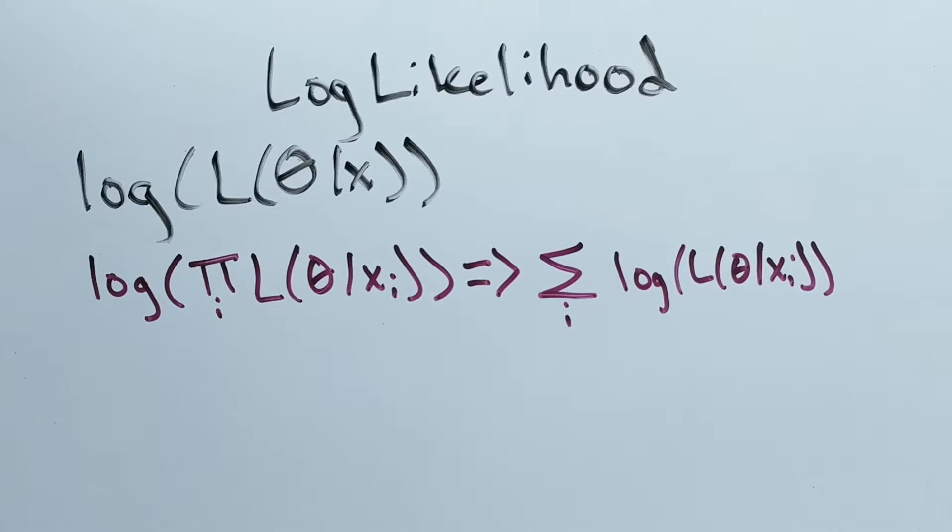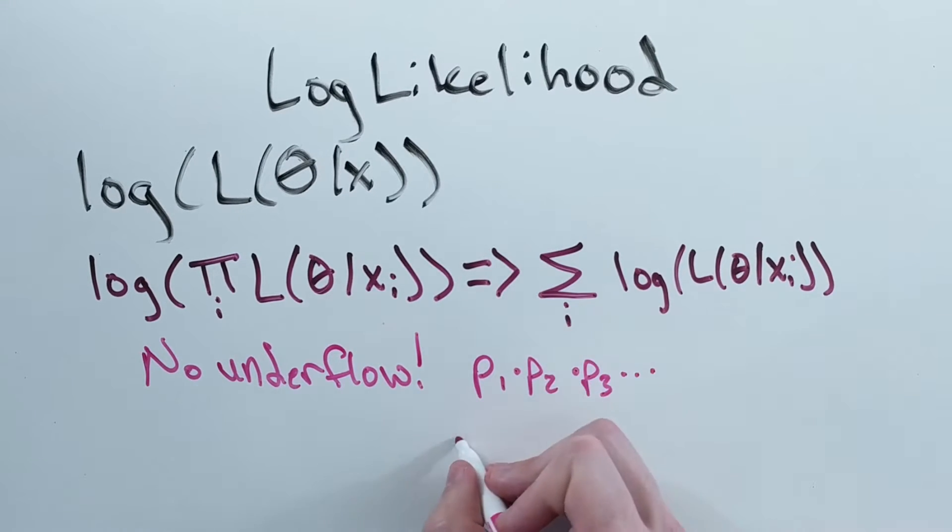With a lot of data points, multiplying probabilities together will quickly approach zero and underflow, meaning that the number gets so small we can no longer represent it properly.